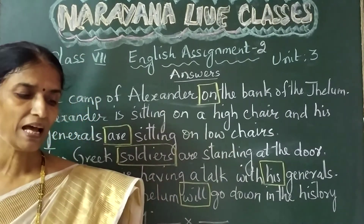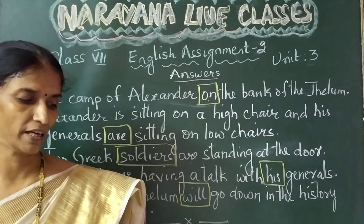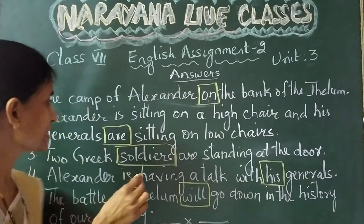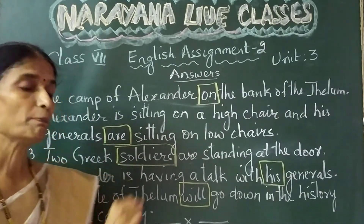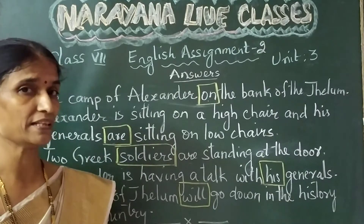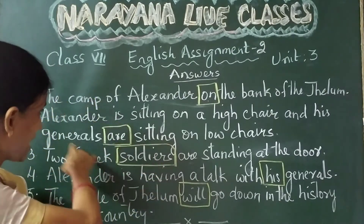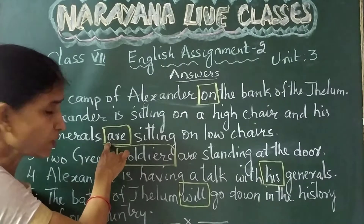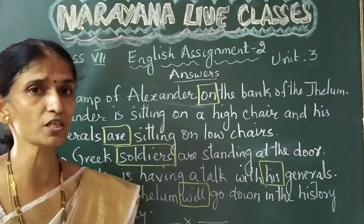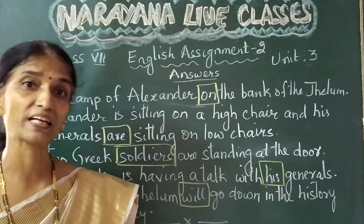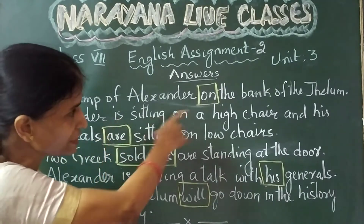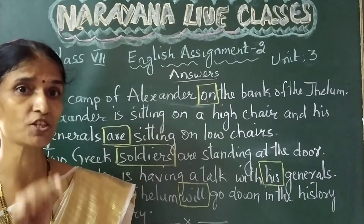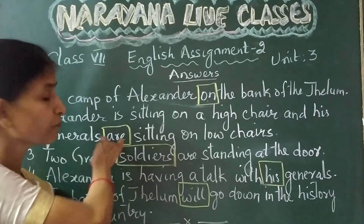Now the second sentence: 'Alexander is sitting on a high chair and his four generals were sitting on low chairs.' The mistake is at the tense of the verb. The be-form used in the given sentence is 'were,' but the other sentences in the input passage are in present tense. So this verb should be replaced with 'are,' which is the present be-form. The corrected sentence is: 'Alexander is sitting on a high chair and his generals are sitting on low chairs.'